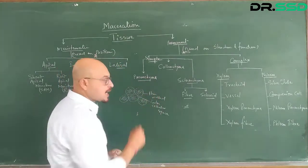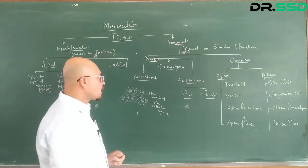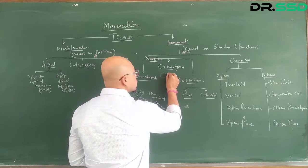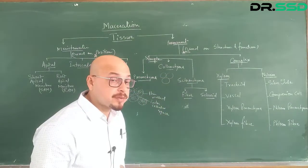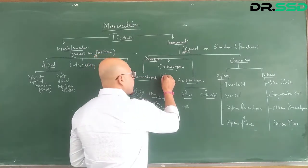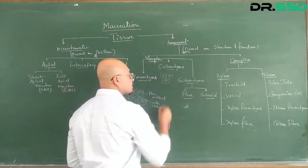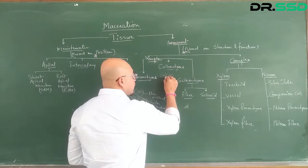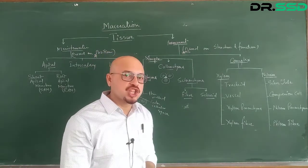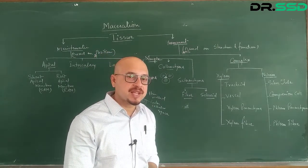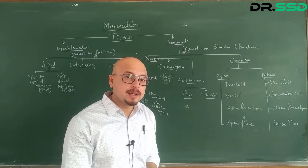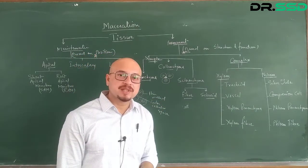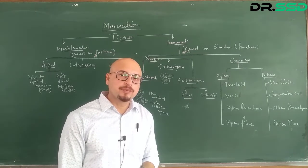Colenchyma is very similar to parenchyma. The cells are isodiametric and have a large nucleus. However, the difference is that the interconnecting point — the common junction between two, three, or four cells — is lignified. Thickenings are always at the corners, exclusively present at the corners where two or three cells meet.